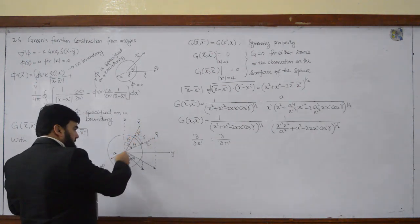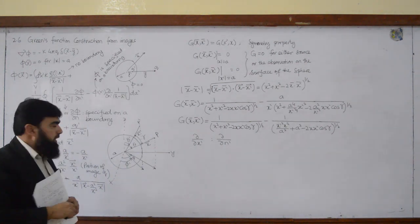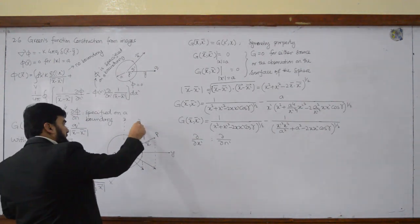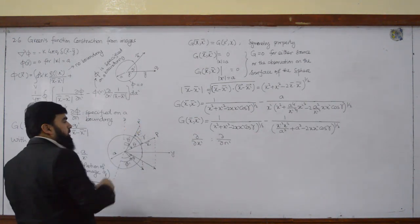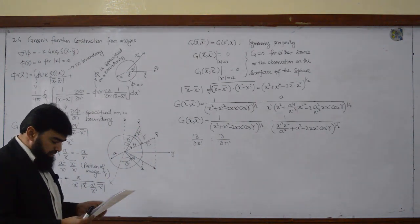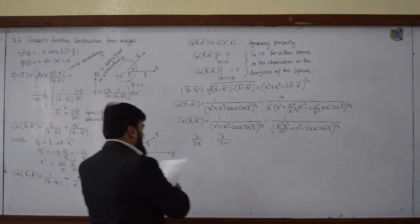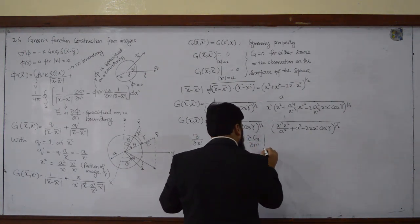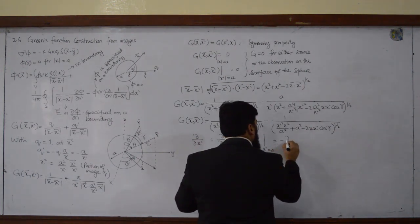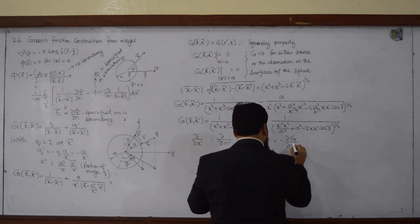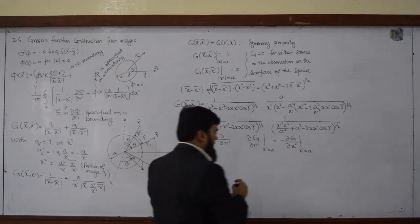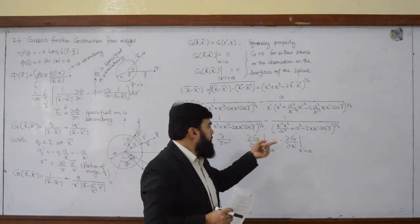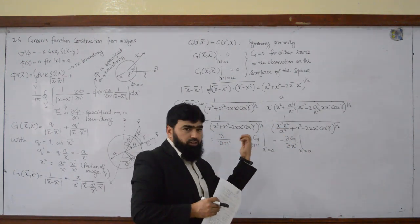This one is going toward the surface of the sphere, because the source is here — the source is a charge, maybe a charge distribution — and the variation of the field lines from the source toward the surface is actually this one. So it means that curly g over curly n prime at x prime equals a is equal to minus curly g over curly x prime at x prime equals a.